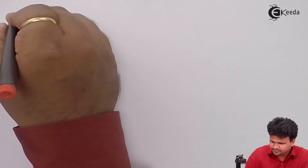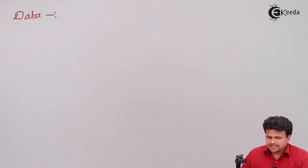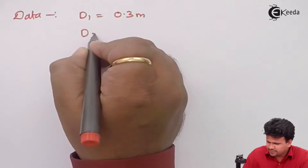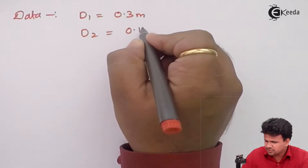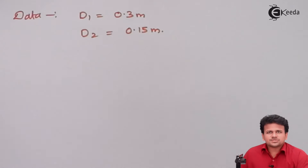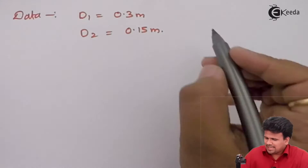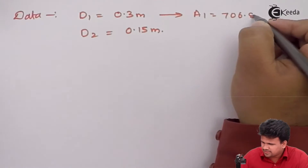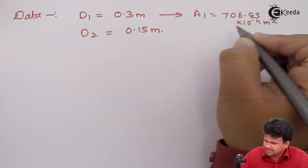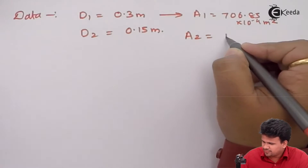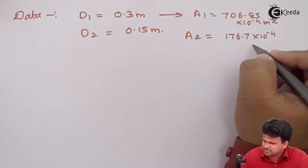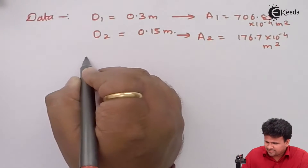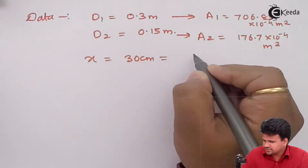The diameter of the pipe D1 is given as 0.3 meters, and D2, the diameter of the throat, is 0.15 meters. We can calculate the corresponding areas: A1 equals 706.85 × 10⁻⁴ m², and A2 equals 176.7 × 10⁻⁴ m², the cross-sectional area of the throat. The value of X is given as 30 centimeters, which is 0.3 meters.